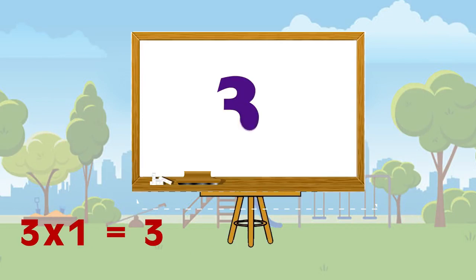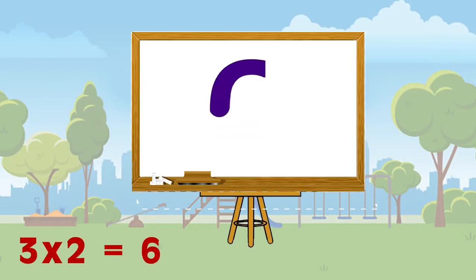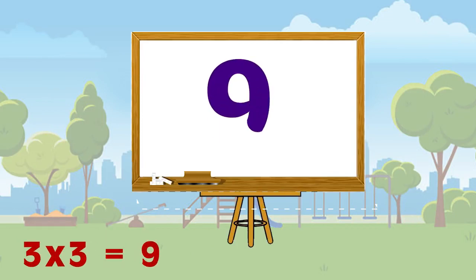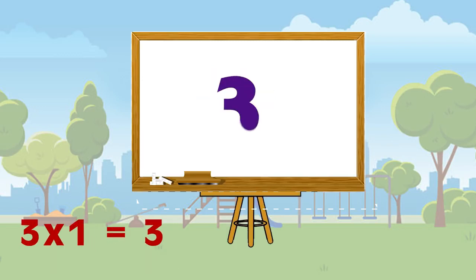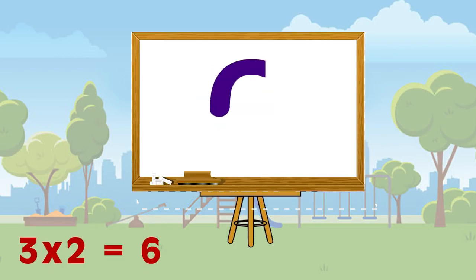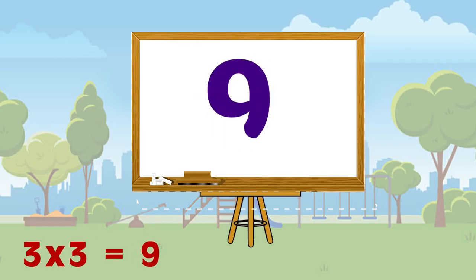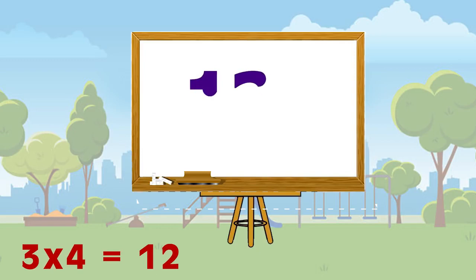Three ones are three, three twos are six, three threes are nine, three fours are twelve. Three ones are three, three twos are six, three threes are nine, three fours are twelve.